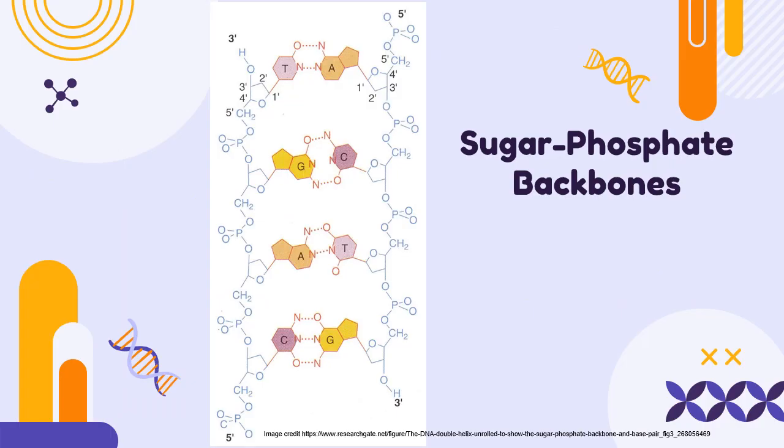The sugar and phosphate groups of nucleotides combine to make what we call the backbones of RNA and DNA. Here we have sugar, phosphate, sugar, phosphate, and these combine to form the backbone. On the inside, we have nitrogenous bases that will hydrogen bond to each other in DNA to make double strands.